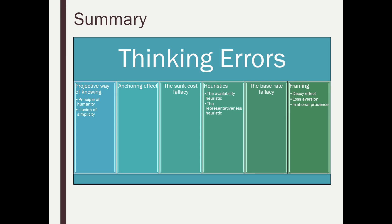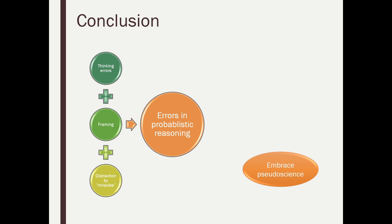Let's summarize all of this. Under the overall header of thinking errors: we have the projective way of knowing — the principle of humanity and the illusion of simplicity; the anchoring effect; the sunk cost fallacy; the heuristics — availability and representativeness; and the base rate fallacy; plus the framing effect — including the decoy effect, loss aversion, and irrational prudence. All of these are different kinds of thinking errors that contribute to us focusing on the wrong parts of information.